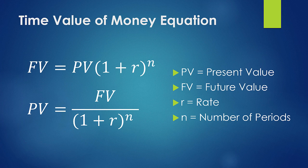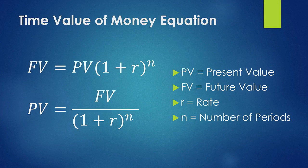Present value and future value actually use the same equation. You can just flip the equation around depending on what you're trying to calculate. In the example we did previously with the dollar today and the dollar tomorrow, we're just talking about one period, so we didn't consider the variable n, because it was just one.